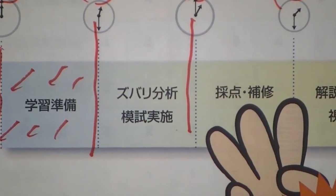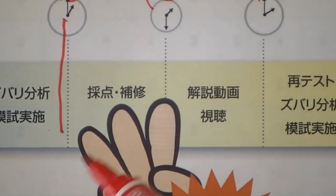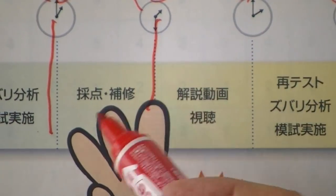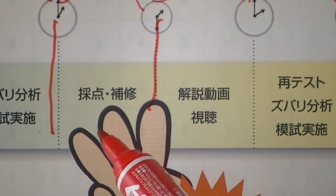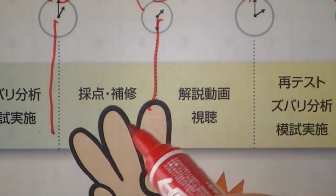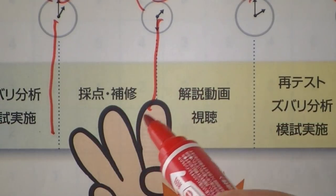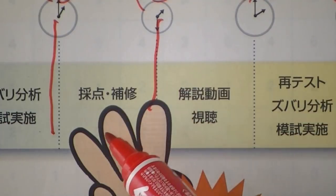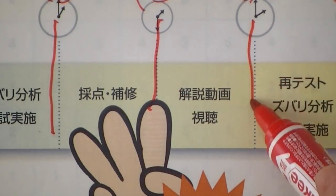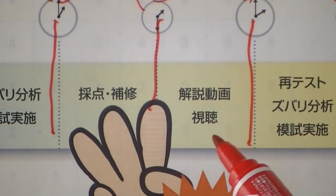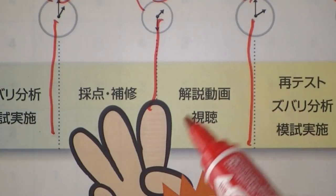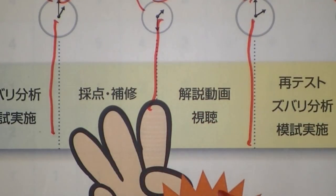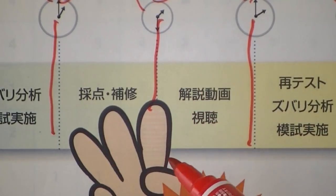まずここで30分くらい自分で学習してください。そして30分間のズバリ分析問題をやっていただいて、点数はいくら取るか分かりませんが、とりあえずやっていただいて採点を自分でしていただく。どこが悪いのかということで回答を見て合わせて自分でチェックをする。そしたら次に残りの30分で動画の解説を見ていただく。